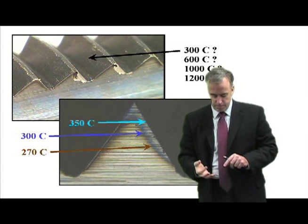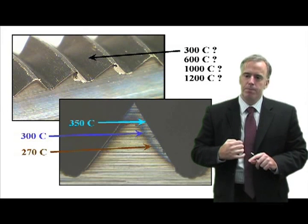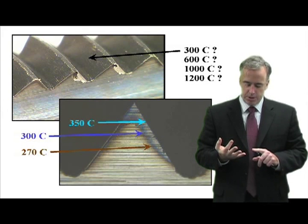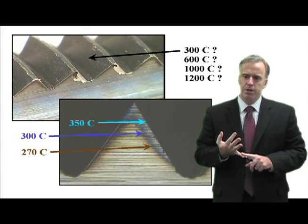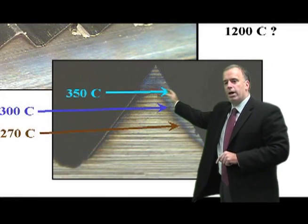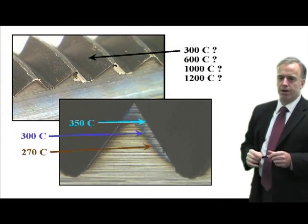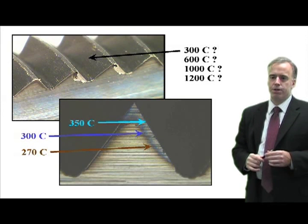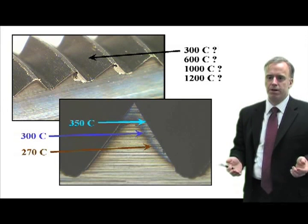Now, what was the temperature of that region? It's pretty easy to figure out. It goes back to when they used to look at temper colors. You can determine the temperature that the workpiece reached based on the temper colors. The light blue region reached maybe 350°C, the dark blue region 300°C, the brown region maybe 270°C.